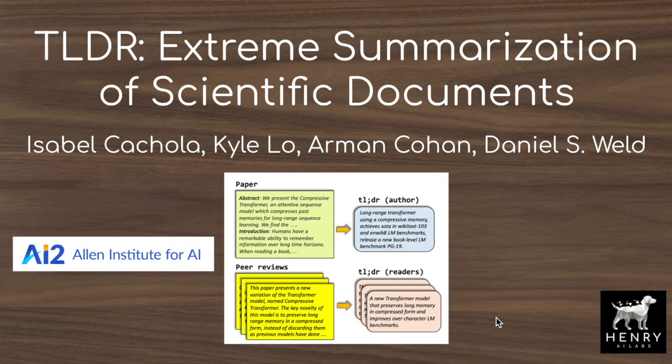This video will explain the too-long-didn't-read dataset developed by researchers at the Allen Institute for Artificial Intelligence. The goal of this dataset is to train models that can automatically write one-sentence summaries of complex machine learning papers. The researchers also provide baseline results with a pre-trained BART language model on this dataset, and this video will present some of the details behind that BART model from Facebook AI and how it bridges modeling differences between Google's BERT and OpenAI's GPT.